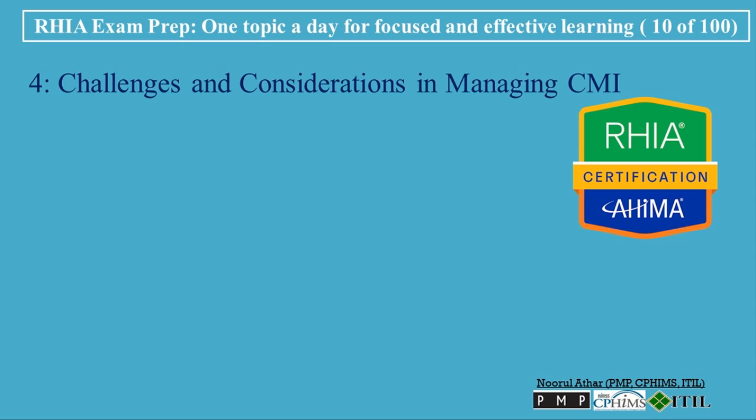Challenges and Considerations in Managing CMI: While CMI is an important metric, managing and interpreting it comes with challenges. Coding Accuracy: Accurate coding is essential for calculating CMI. If coding is inaccurate or incomplete, it can lead to an incorrect CMI, which in turn can affect reimbursement, resource allocation, and overall financial performance. Regular audits and coder training are critical to ensuring coding accuracy.